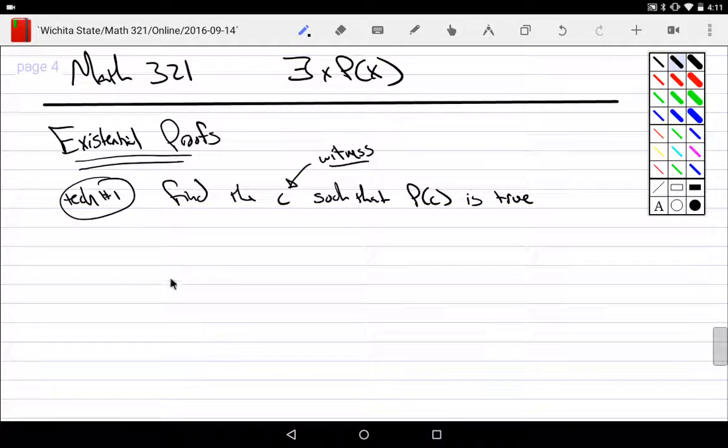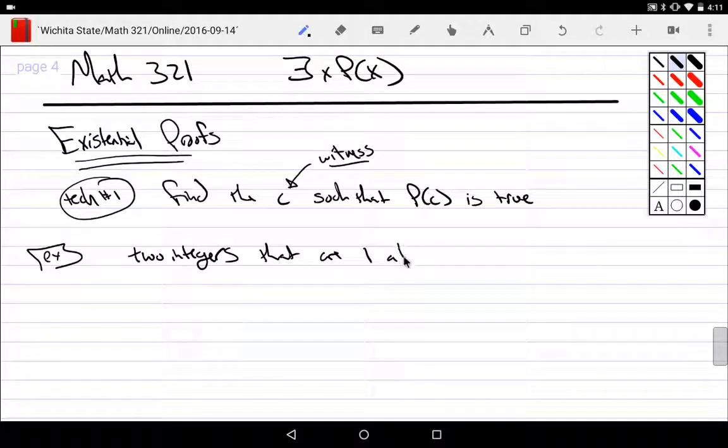A lot of times this is just simply done by brute force. An example of things like this would be there's two integers that are one apart and one is a cube and one a square.